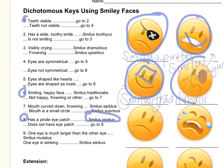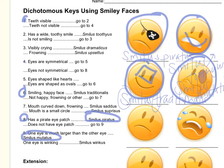Let's do this guy. Teeth visible? No — go to four. Eyes are symmetrical? No — go to eight. Has a pirate patch? No. Does not have a pirate patch — go to nine. One eye is much larger than the other eye? Yes. So he is Smilus mutatus. That's this guy — Smilus mutatus.